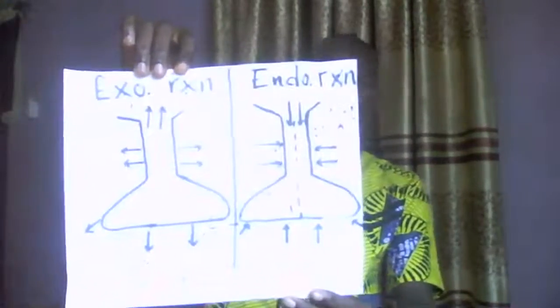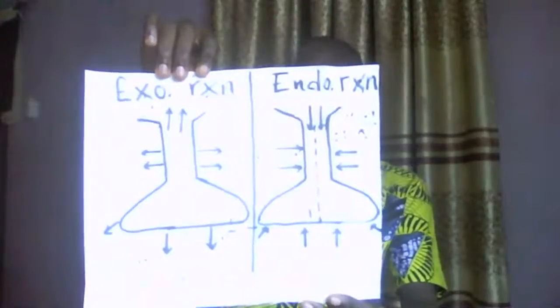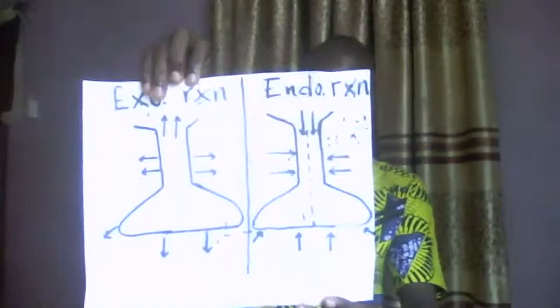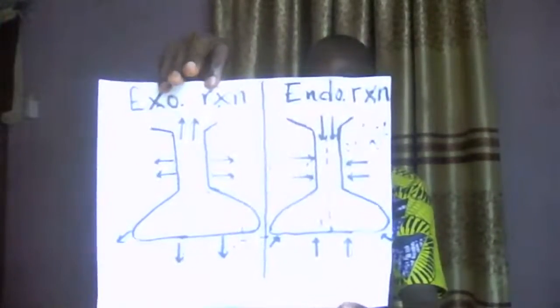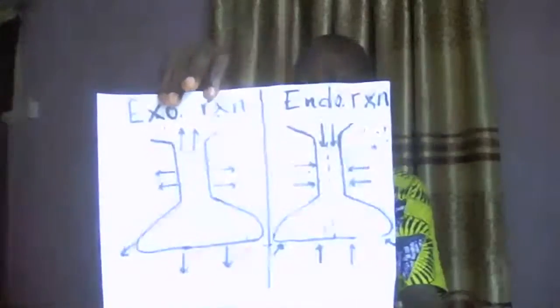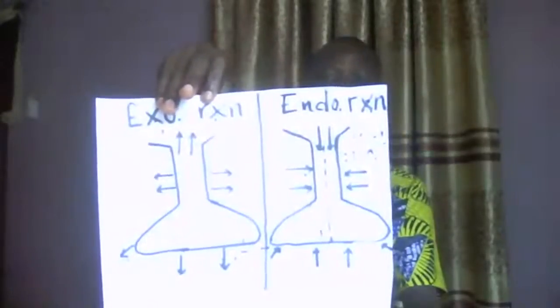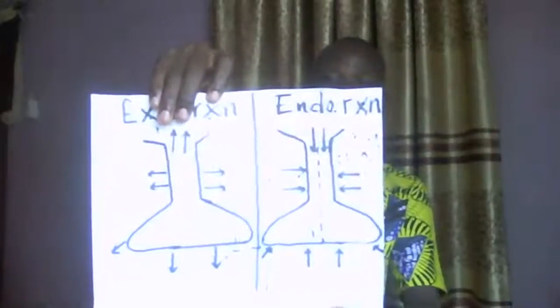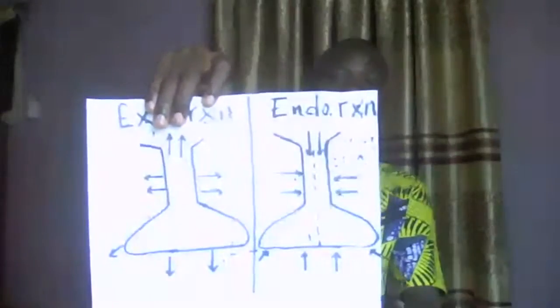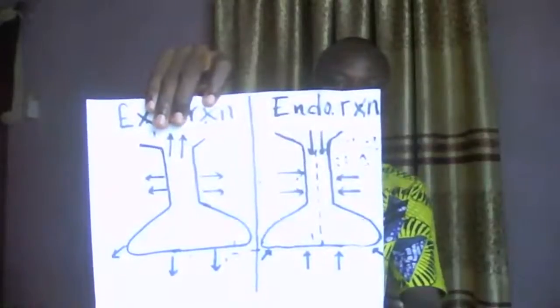To further explain endothermic and exothermic reactions, this illustration shows both types. In one diagram, the arrows are pointing outwards, meaning heat is liberated to the surroundings — that is exothermic, a loss of heat to the surroundings. In the other diagram, the arrows are pointing inwards into the conical flask, meaning energy is being absorbed from the surroundings — that is endothermic. This is how you can demonstrate exothermic and endothermic reactions.